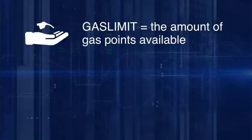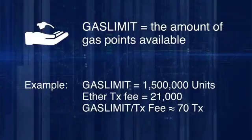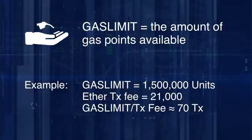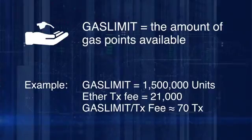So far we looked at the gas-related items in a transaction. Now let's look at the gas-related items in a block: gas limit and gas spent. Gas limit is the amount of gas points available for a block to spend. For example, if a block specifies a limit of 1,500,000 units of gas and a basic Ether transaction fee is 21,000, this particular Ethereum block can fit about 70 plain Ether transactions.